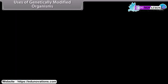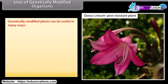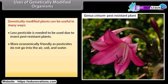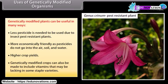Uses of genetically modified organisms: Genetically modified plants can be useful in many ways. Less pesticide is needed due to insect-pest-resistant plants. More environmentally friendly as pesticides do not go into the air, soil and water. Higher crop yields. Genetically modified crops can also be made to include vitamins that may be lacking in some staple varieties.